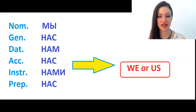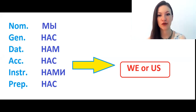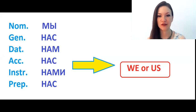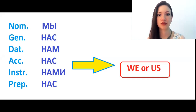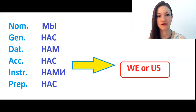And today at this Russian lesson, we are going to continue talking about declension of Russian personal pronouns, and we will talk only about plural forms: мы, вы, они.